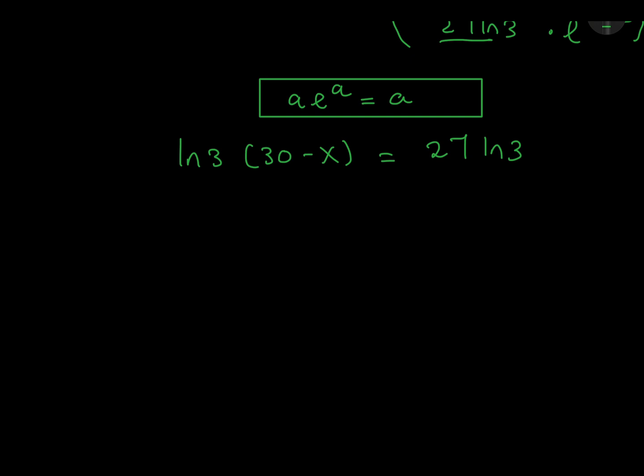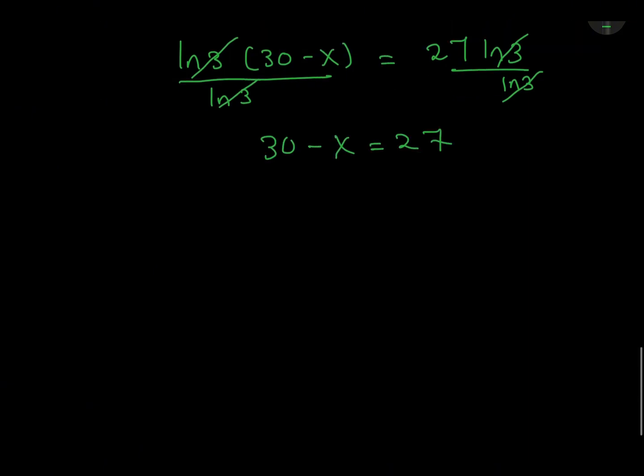Because we have ln 3 on both sides, we can cancel them. From here it's just easy stuff. You know that x will be equal to 3. So this is our answer.